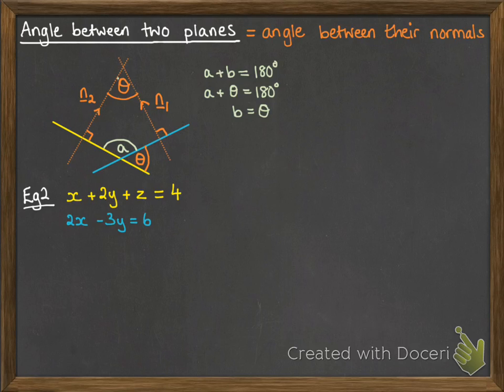So here's our example. I'm going to use those same planes again that we just had. Now, the normal to the first one, we just take those coefficients of x, y, z, and the normal to the second one.